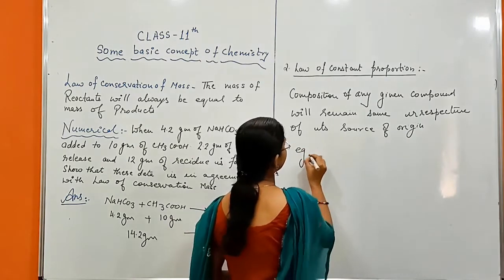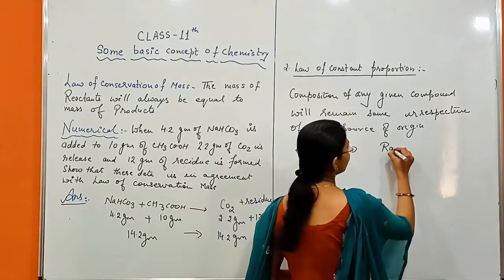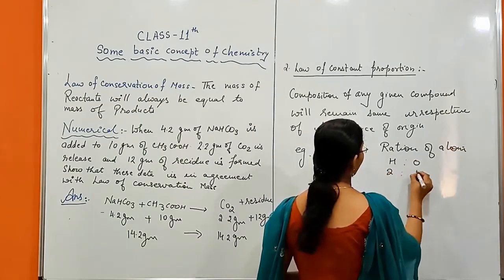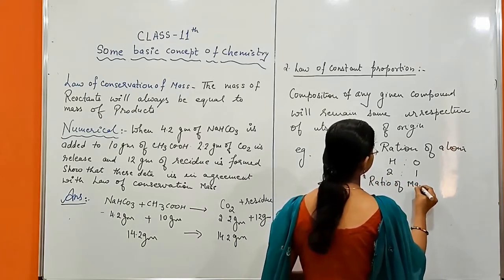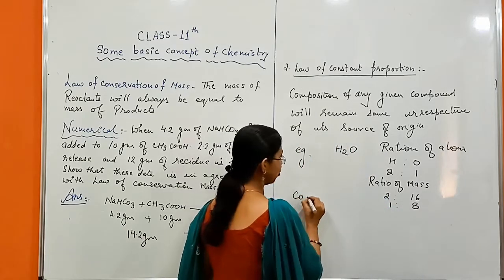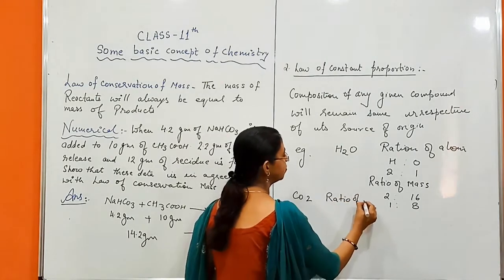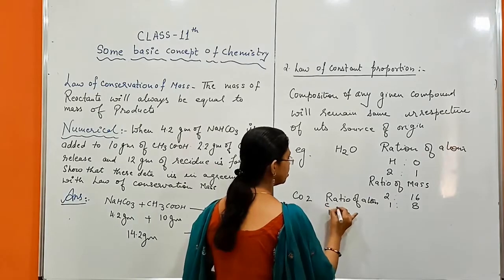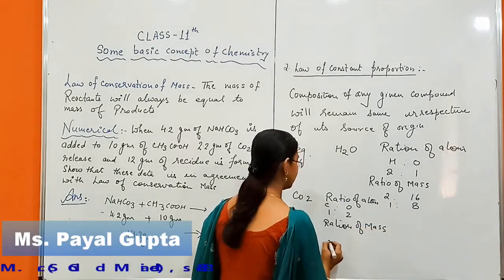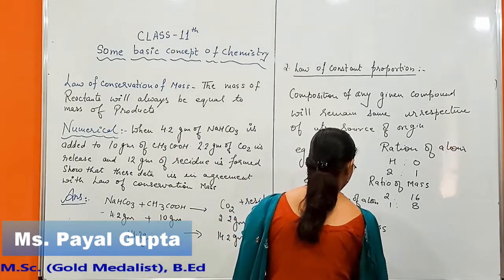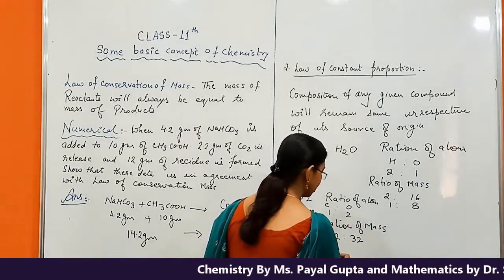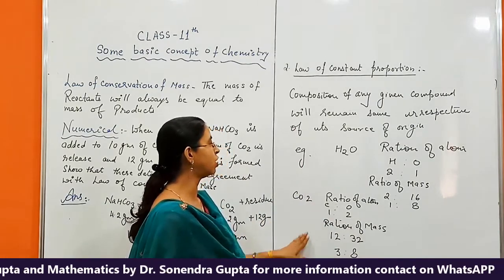For example, if we have water (H2O), the ratio of atoms is 2:1 and the ratio of mass is 2:16, or 1:8. For CO2, the ratio of atoms is 1:2 (carbon to oxygen), and the ratio of mass is 12:32, which simplifies by dividing by 4 to give 3:8. So this ratio will remain constant.